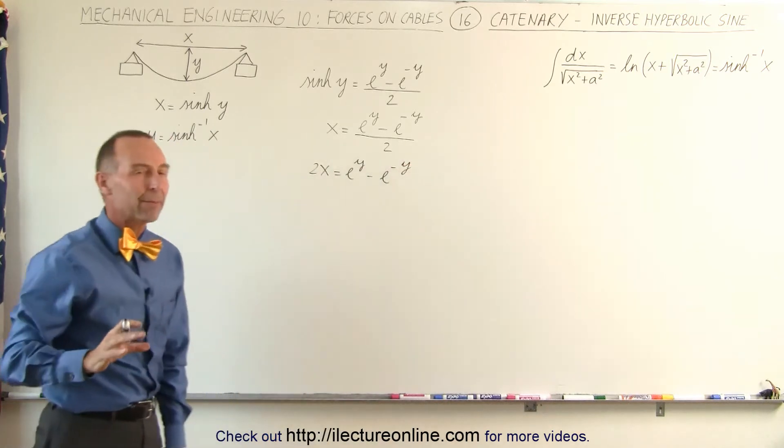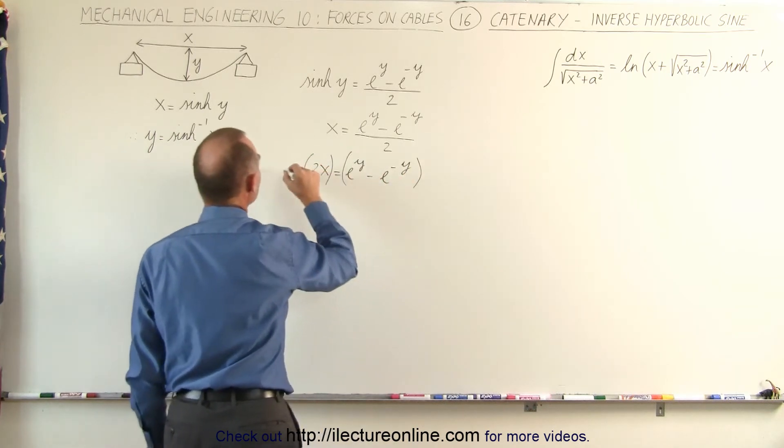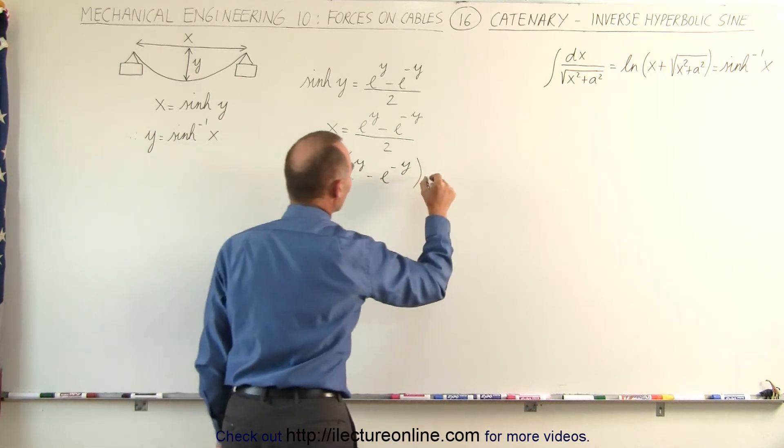Now we're going to play a mathematical trick. We're going to multiply both sides of the equation by e to the y, and this one, e to the y.